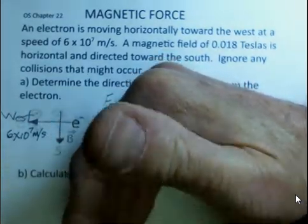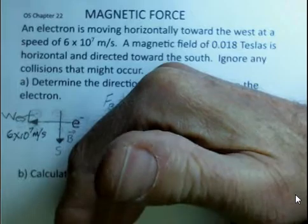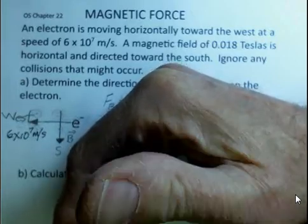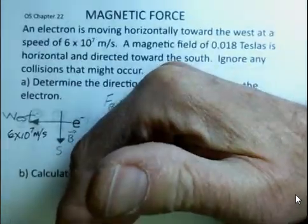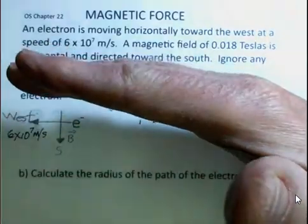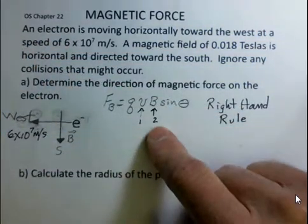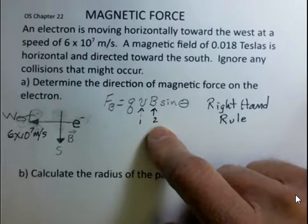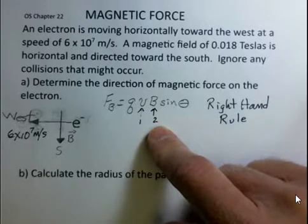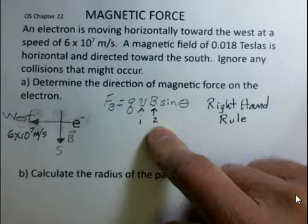Now I orient my wrist and my palm so I can easily turn my fingers into the direction of the magnetic field that's towards the south, towards the bottom of the page here. When I do that, my thumb shows the direction of the magnetic force on a positive particle.